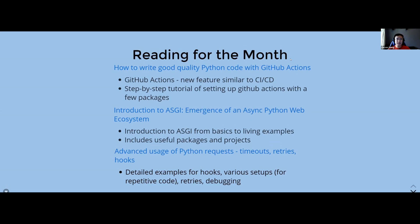The reading for the month: the first article is 'How do we write good quality Python code with GitHub Actions?' GitHub Actions is a new feature, similar to CI/CD but a little different. The article is for beginners but introduces a lot of different packages and a step-by-step tutorial on how to set up GitHub Actions.